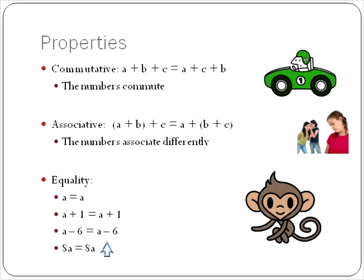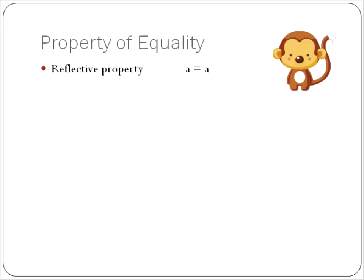There are some subgroups of the property of equality that I want to talk about, but largely, they're going to follow these same rules. The reflective property is just when you have something, it's reflected exactly on the other side. A equals A.